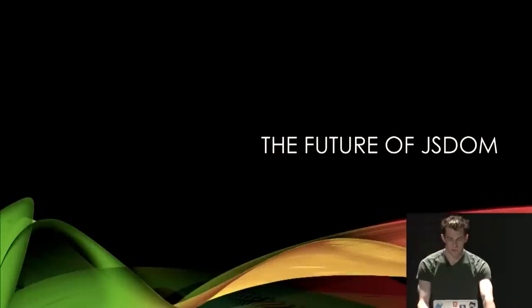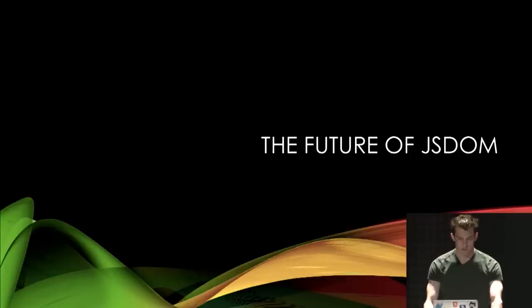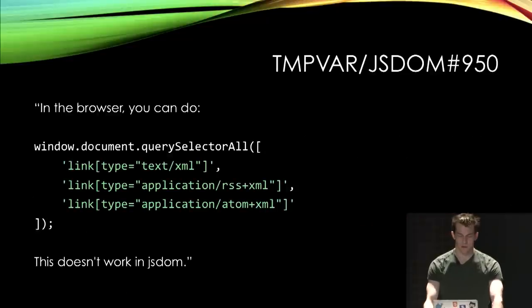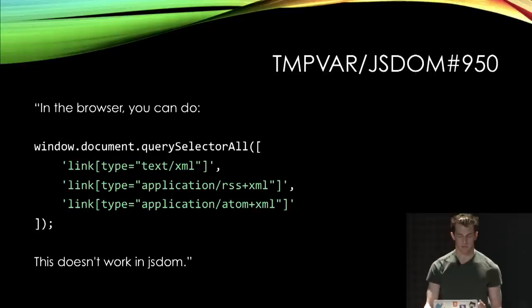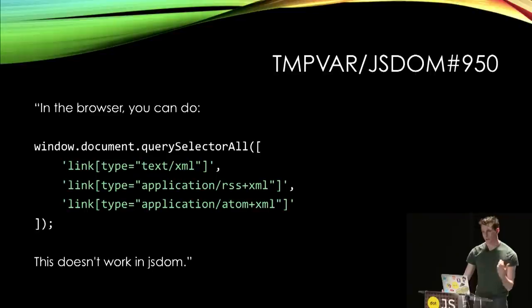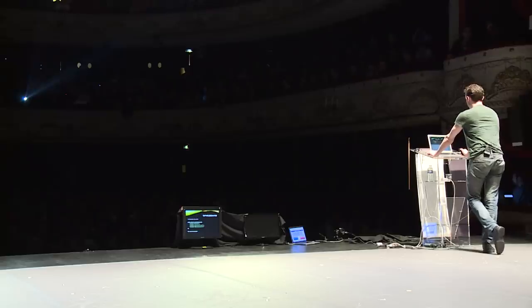To wrap up, I want to talk about the future of JSDOM in a roundabout way — I promise it'll all connect up. An interesting bug came up about a week ago. The user said that in the browser you can do window.document.querySelectorAll and pass it an array. This doesn't work in JSDOM — that was the bug report. And I was like, wow, I've never heard of anybody passing an array to querySelectorAll, but I guess it does work.